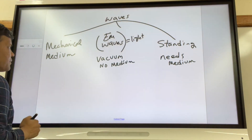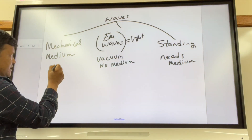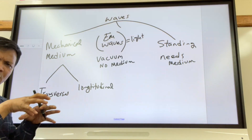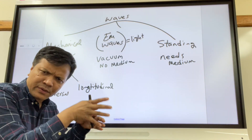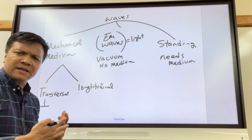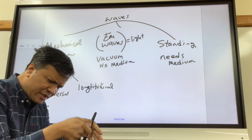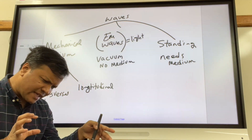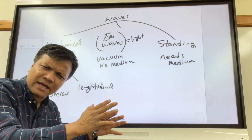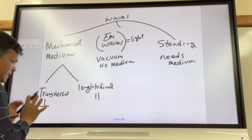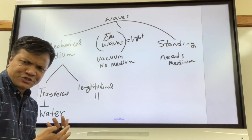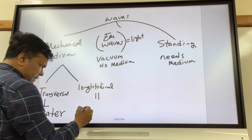Now we're going to talk about two types of mechanical waves: transverse and longitudinal. In transverse waves, the particles oscillate perpendicular with respect to the direction of the wave. In longitudinal waves — for example, when you move a slinky back and forth — the particles oscillate parallel with respect to the direction of the wave. An example of transverse waves is water waves; an example of longitudinal waves is sound waves.